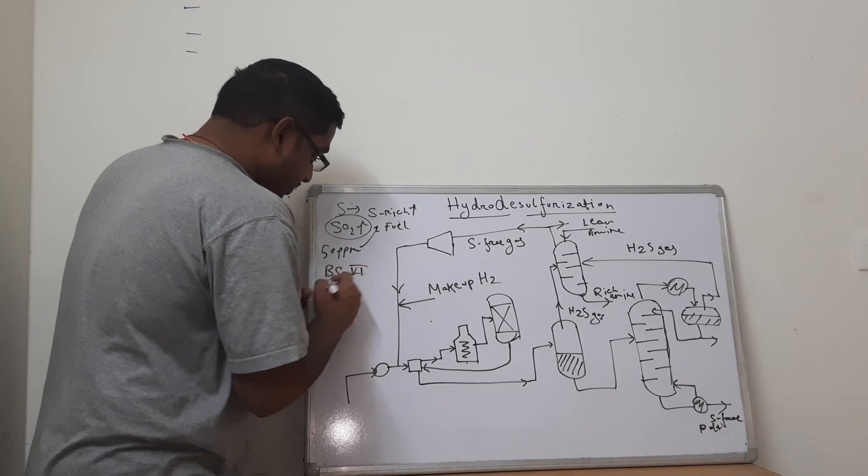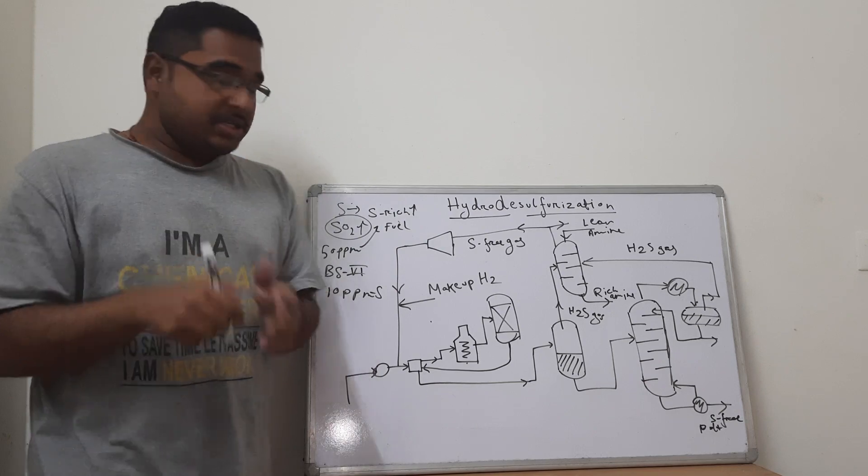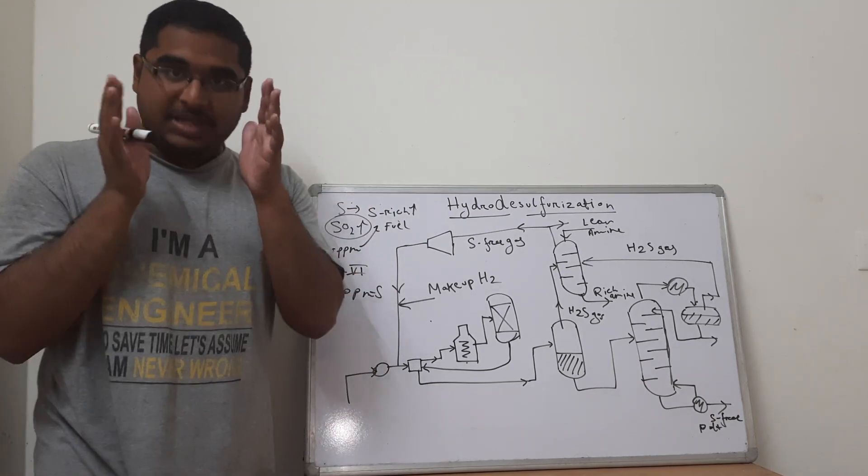But now in the BS6 engine that we are launching right now, only 10 ppm sulfur is allowed in the fuel. So you see, there is an urgent need of removal of sulfur to reduce the emissions firstly.